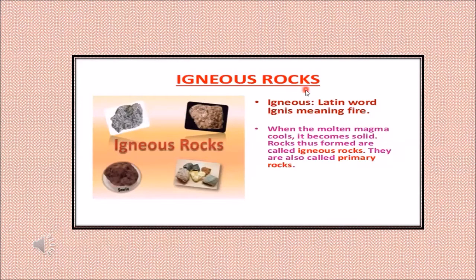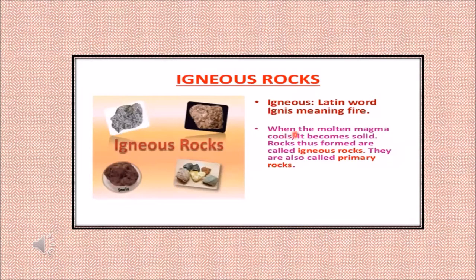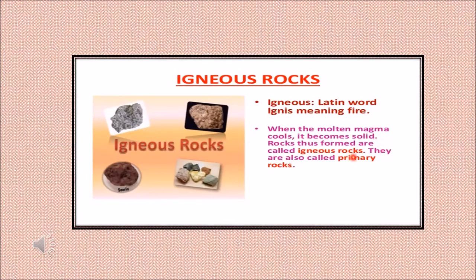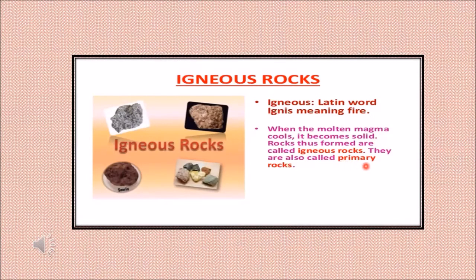Let's talk about igneous rock. Igneous comes from the Latin word ignis, meaning fire — it is somehow related to fire. When the molten magma cools down, it becomes solid. The magma comes out of the mouth of the volcano onto the surface of the earth, cools down, and becomes solid. That solid rock is called igneous rock, also known as the primary rock. This is why the word igneous relates to fire — it originates from molten magma.